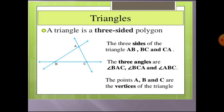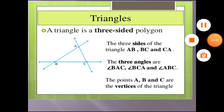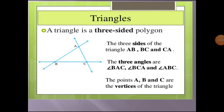The three angles of the triangle are angle A, angle B, and angle C. We can also call them BAC, BCA, and ABC, where the middle letter is the vertex. The vertices of the triangle are points A, B, and C.